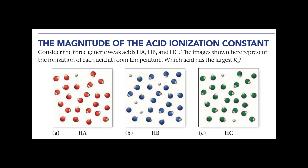The larger the value of Ka, the more the acid will dissociate. Looking at the molecular views, the white represents H and the red represents A⁻. In HA, only one hydrogen has dissociated — very weak. In HB, four hydrogens have dissociated. In HC, two have dissociated. So HB has actually dissociated the largest amount and would have the largest Ka. HC is second with two protons dissociated, and HA is the lowest of the three.